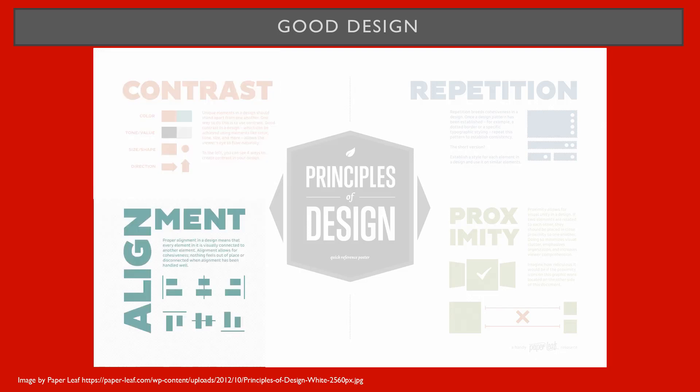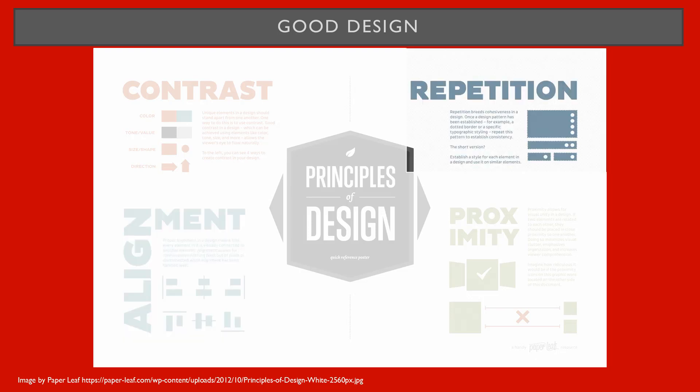The second principle is alignment. In a poster, good alignment is when the edges of content blocks form either a straight vertical or horizontal line. Third is repetition. It helps create consistency with the different elements of your content like color scheme and font type.